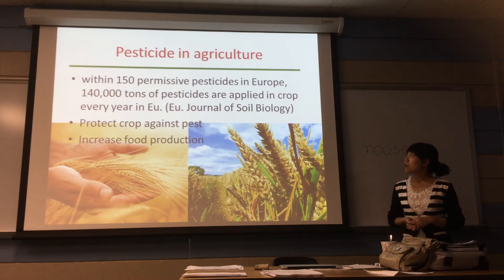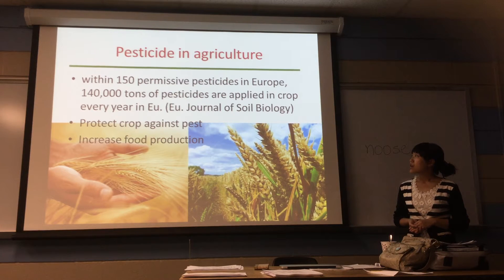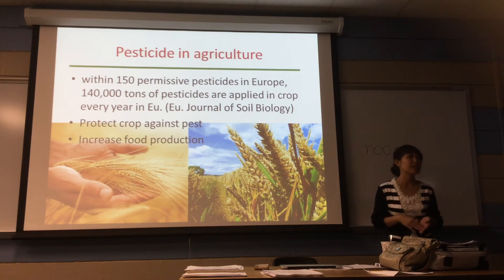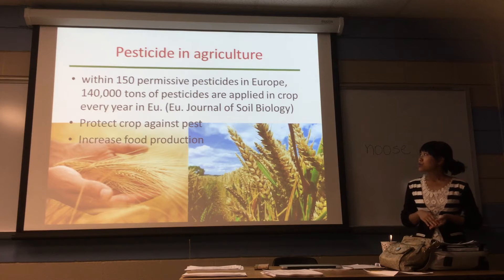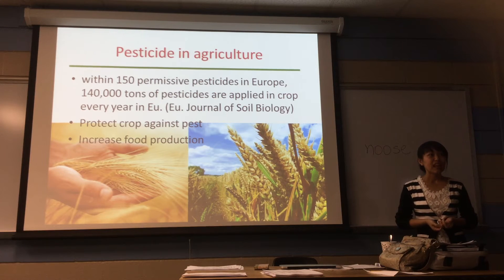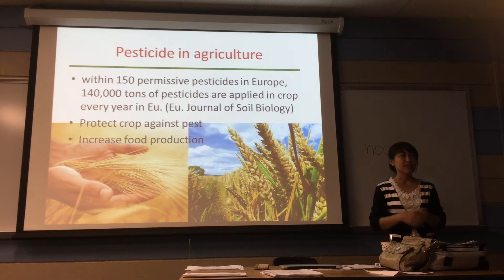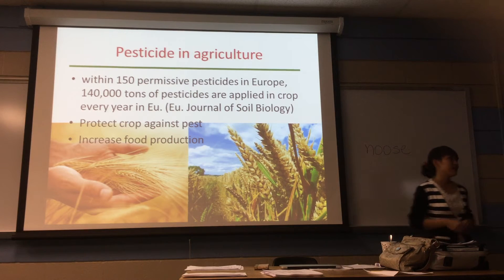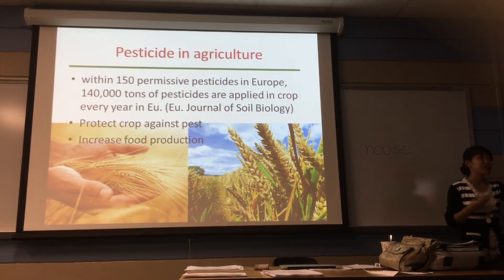We've seen 150 permitted pesticides. In Europe, there are 140,000 tons of pesticides that are applied to crops. And we hear in our region, there's a big number of pesticides that are applied to crops. So why do they use a lot of pesticides? Obviously, to control the pest. And if they successfully control the pest, it means they can boost the crop yield, and increase the production of food. And this is the benefit of using pesticides.